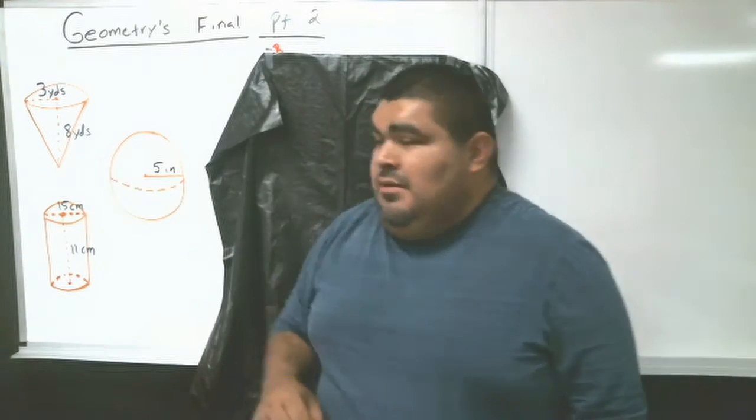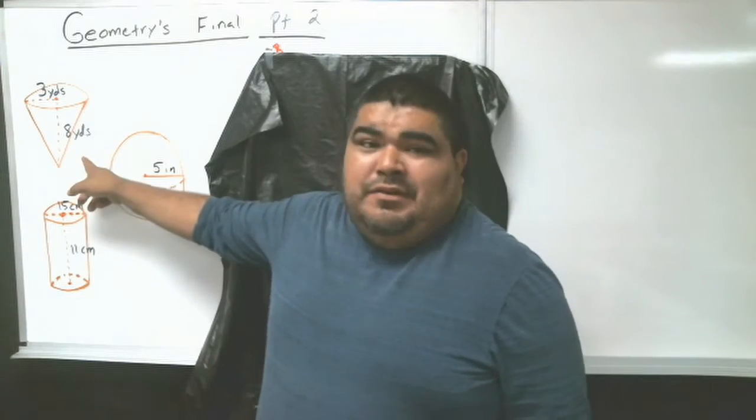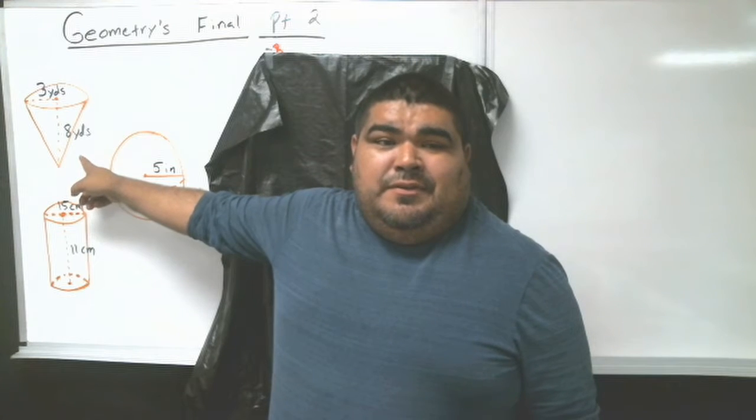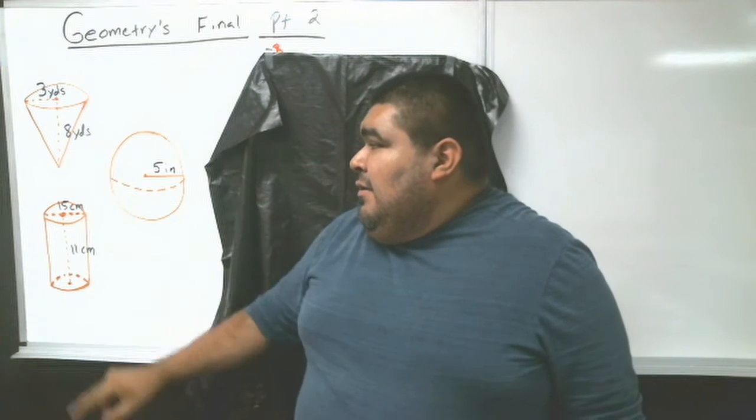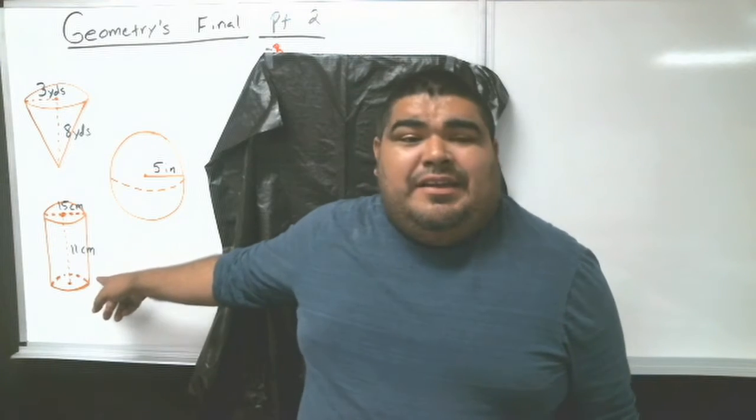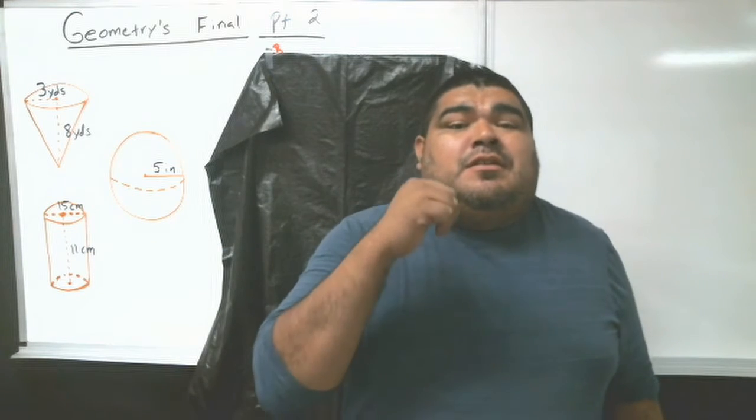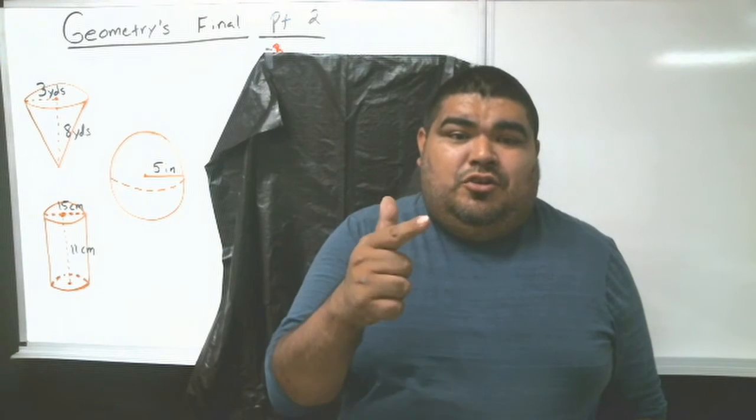We have a cone and a cylinder. For the cylinder, we have one with a radius of 3 and height of 8, and another cylinder with a diameter of 15 and a height of 11. Notice that on the first two you're giving me lateral area, surface area, and volume.